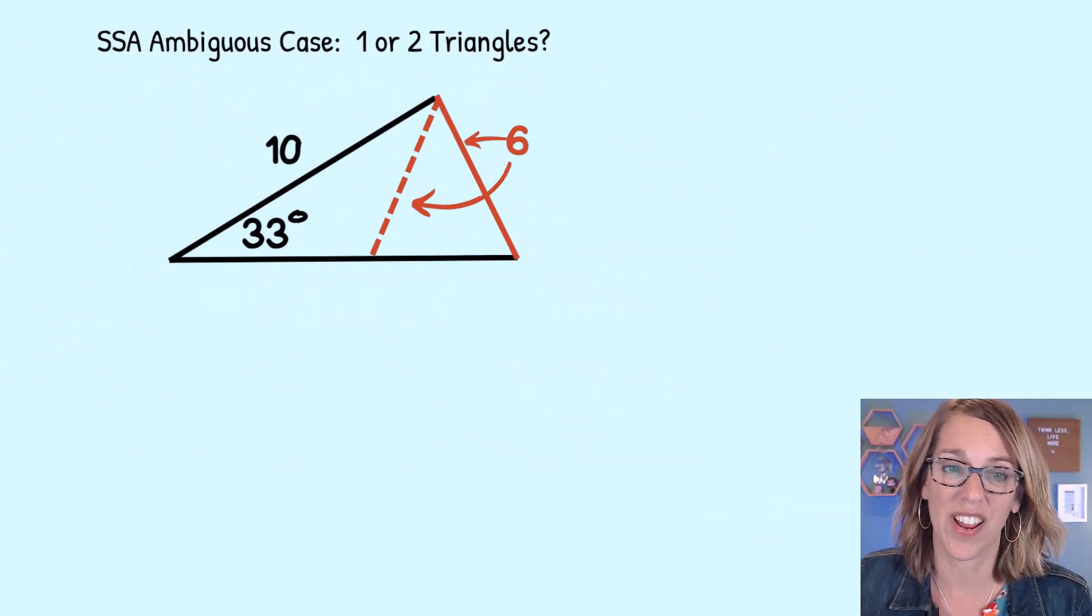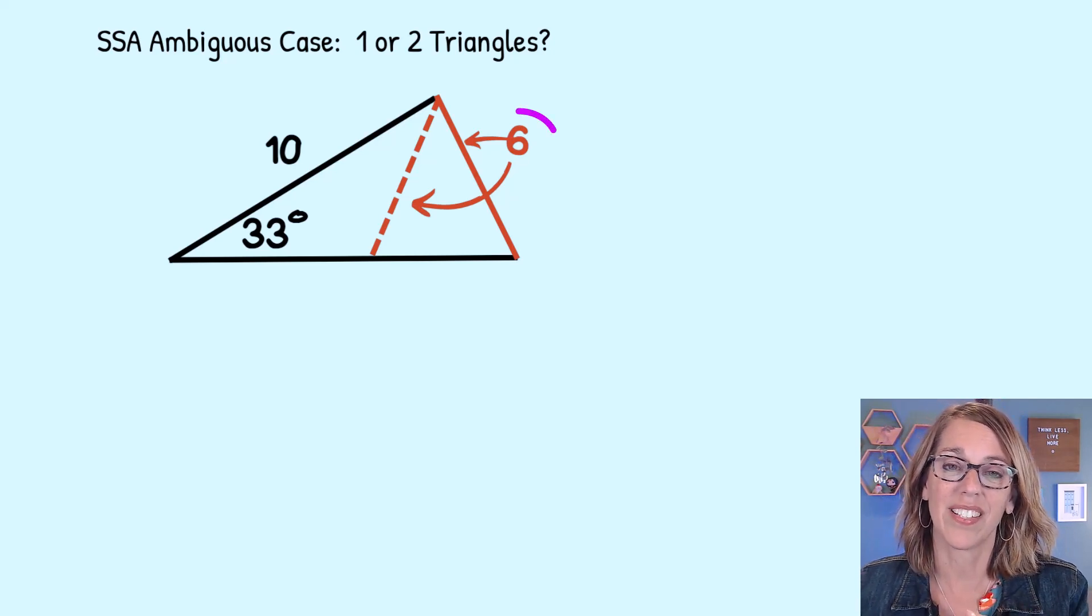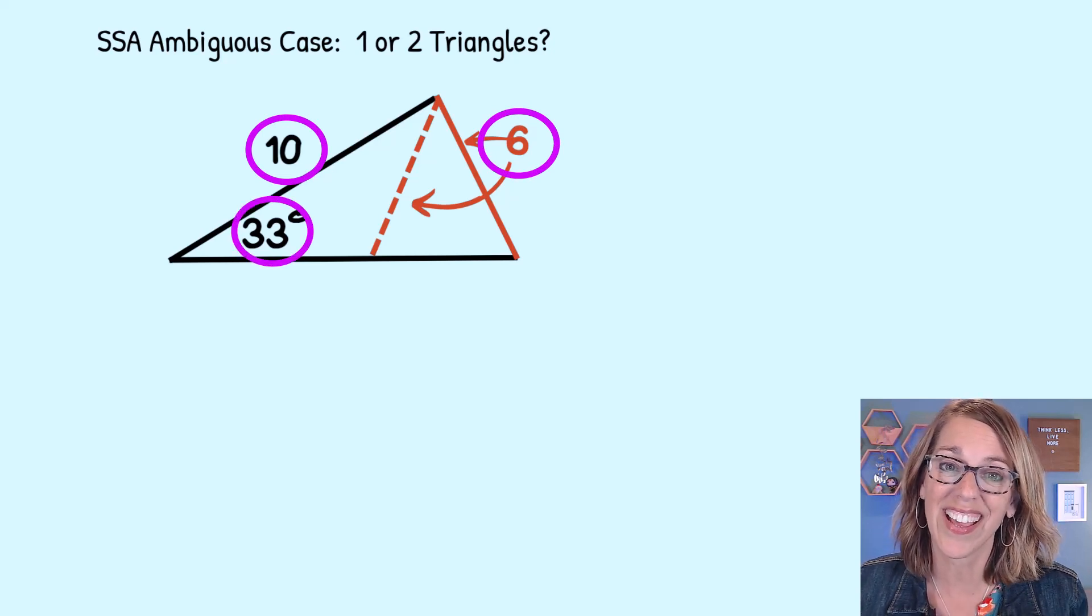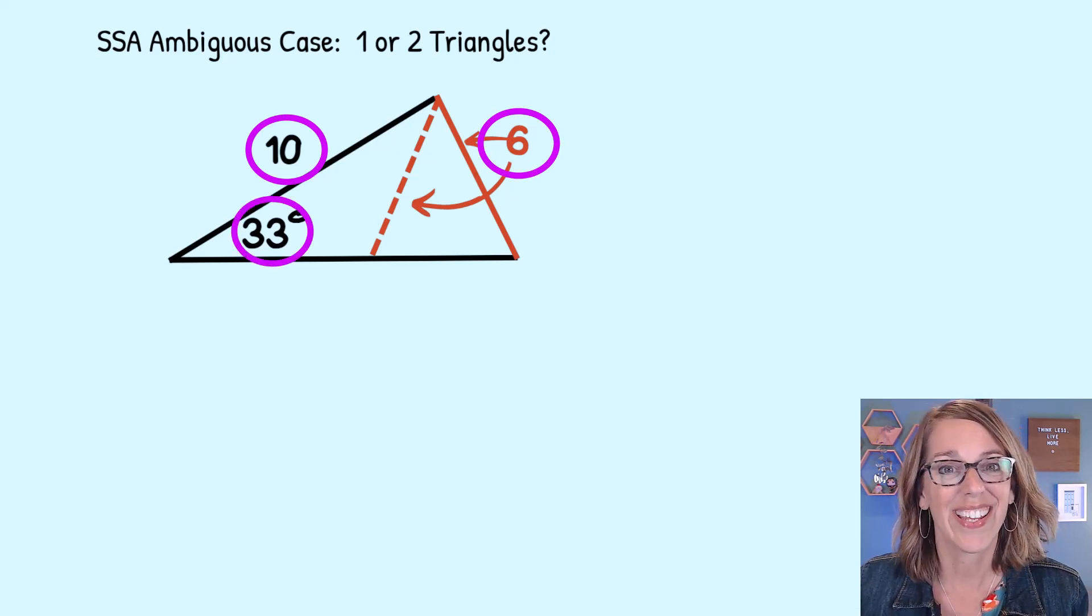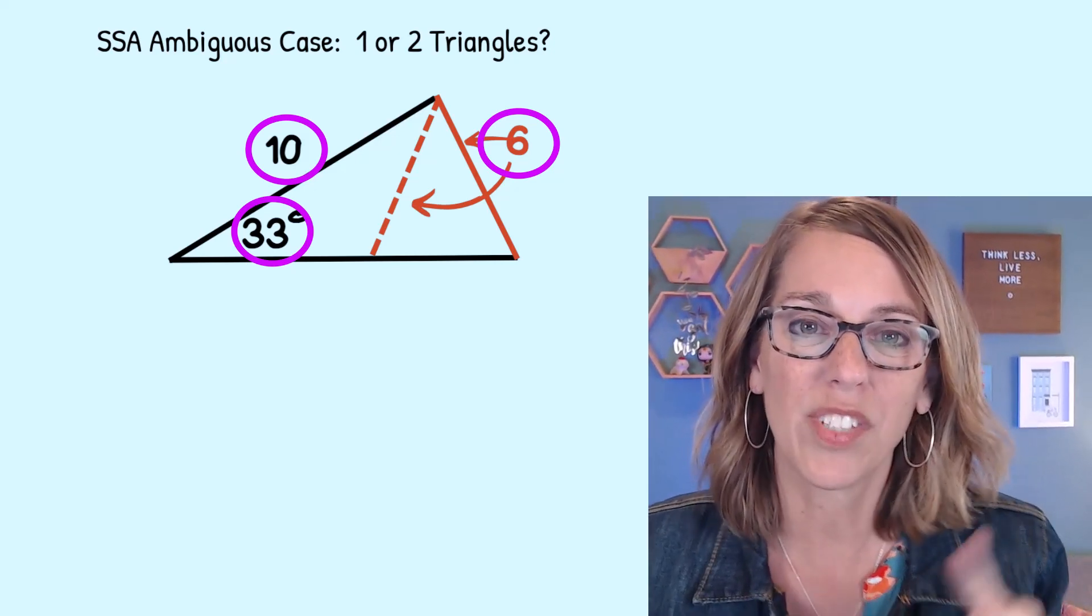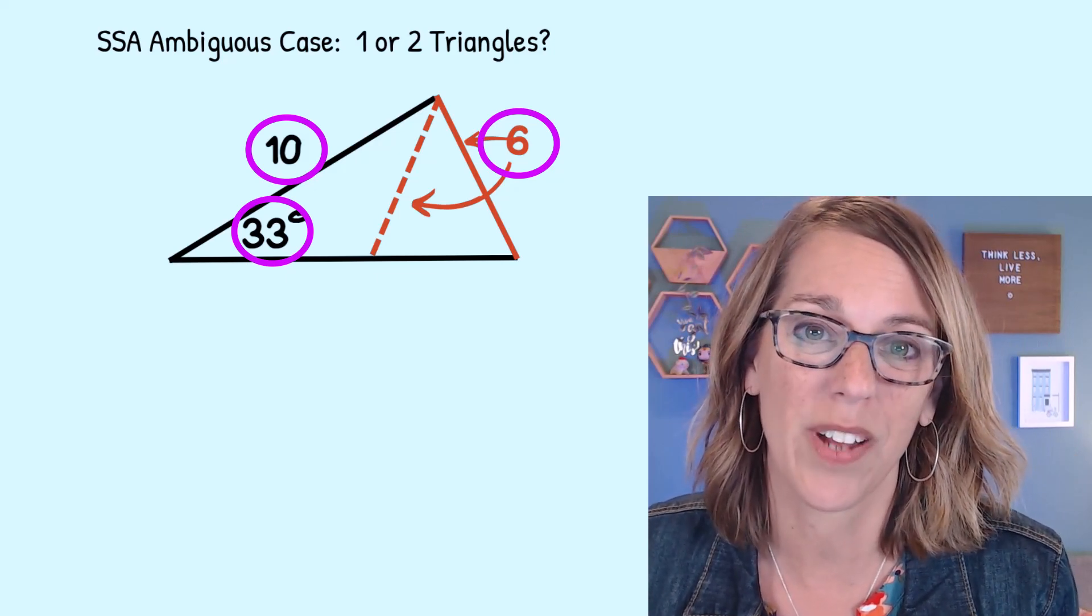And I've solved for everything that I need on this triangle. But what if you had this triangle? This is another type that we're going to use the Law of Sines on. But in this case, I've got a side next to a side next to an angle. This is our side-side-angle case. And it gives us a couple of possible cases. To learn how to do this one, take a look at my video here. You guys are doing so great. Thanks for watching.